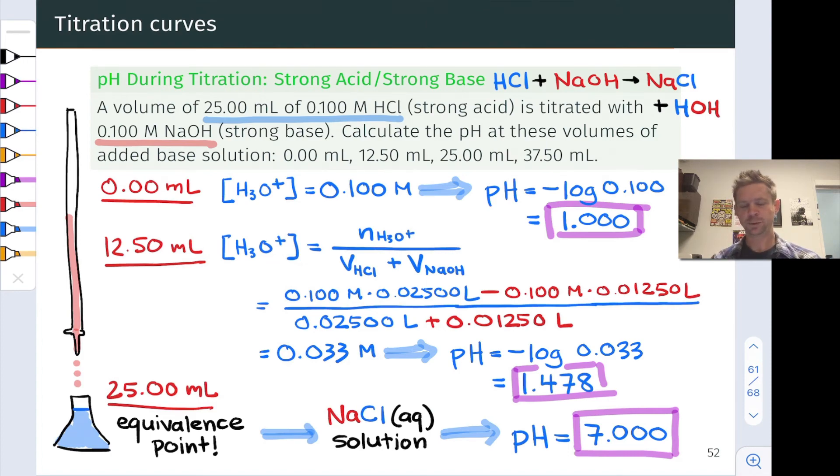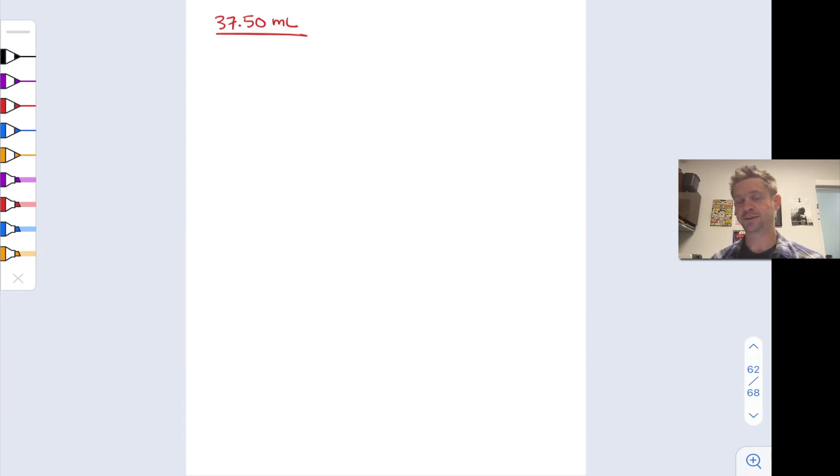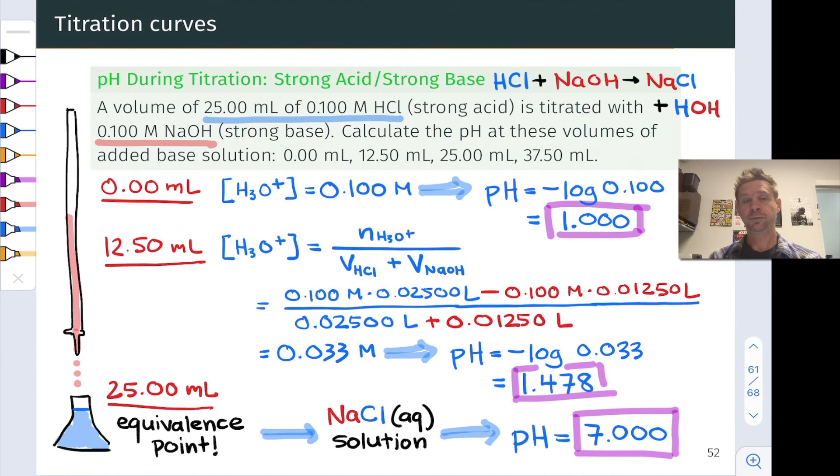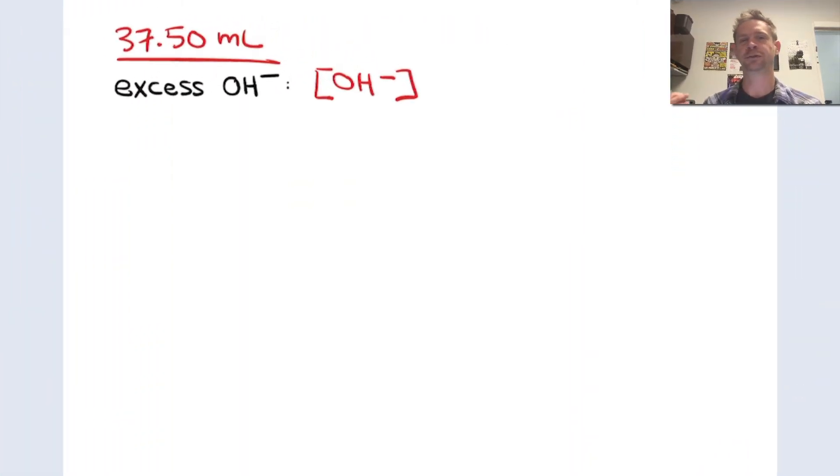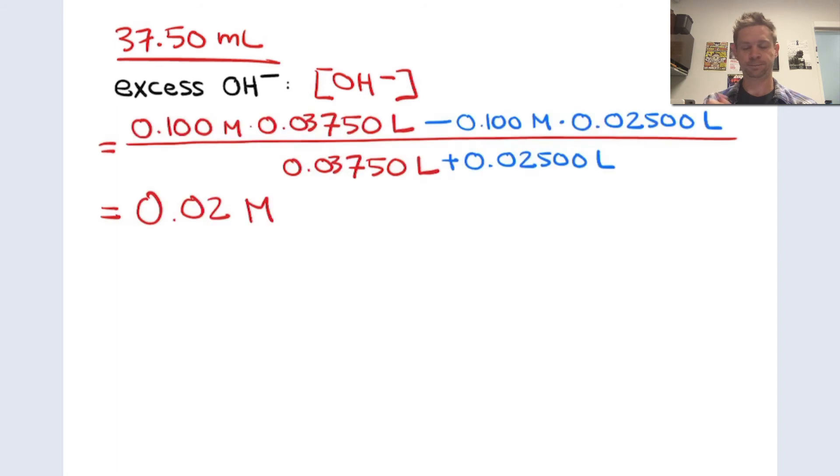Finally, what happens when we've added 37.5 milliliters of hydroxide solution? Because the equivalence point occurred at 25 milliliters, 37.5 milliliters corresponds to an excess hydroxide situation. We've consumed all of the hydronium and we're just piling on the hydroxide. This is on that leveling off portion of the titration curve. It's helpful to think about the concentration of hydroxide in the analyte-titrant mixture and work from hydroxide back to hydronium or pOH back to pH.